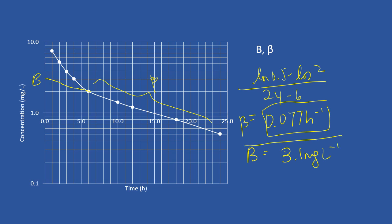Your value can be slightly different from mine depending on how you place the position of your ruler. The next two parameters we are going to solve are A and alpha. To solve these, we need to plot another straight line. You need to read the time points corresponding to the four concentrations here, get the values, and perform a subtraction. I will show you the table in the next slide.